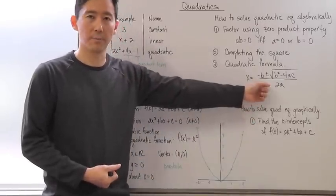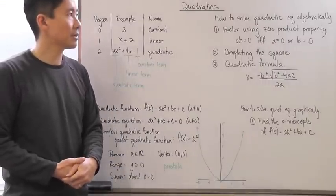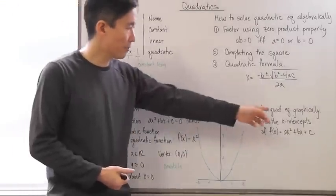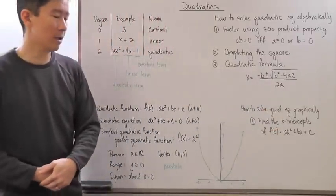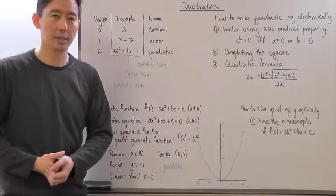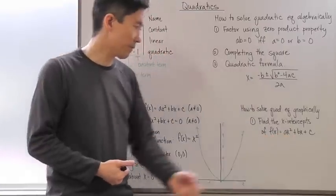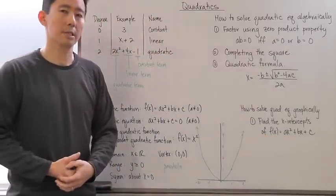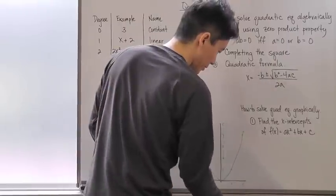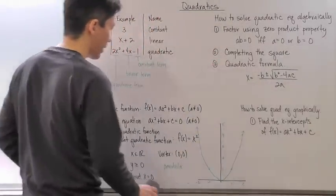Hopefully you have the quadratic formula memorized. Those are the three different ways to solve a quadratic equation algebraically. To solve a quadratic equation graphically, the main thing you have to do is find the x-intercepts — where it crosses the x-axis — of the quadratic function f(x) equals ax squared plus bx plus c.